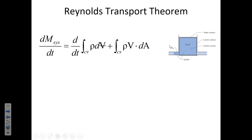We looked at this figure in the last class, talking about the idea of the system and how we track its location over time. We use control surfaces as the outside boundaries for an enclosed space — that's the control volume. The system is a continuously connected network of particles whose location can shift over time. The Reynolds Transport Theorem says we can determine what's happening inside a control volume, where CV refers to the accumulation of mass inside the control volume.